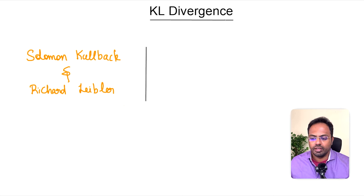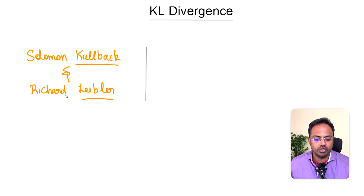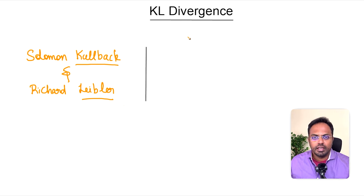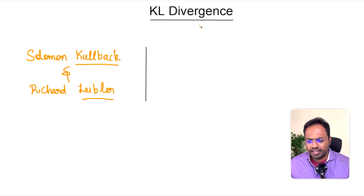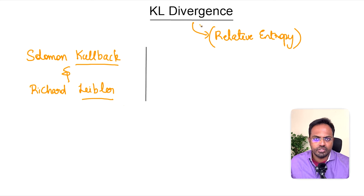Hello everyone, I'm Selva and welcome to my YouTube channel. Today we will understand the entire concept of KL divergence. KL stands for Kullback-Leibler divergence, named after authors Solomon Kullback and Richard Leibler. It is a very fundamental concept in information theory with wide use cases in machine learning and statistical modeling. KL divergence is also called relative entropy, though more popularly people refer to it as KL divergence.